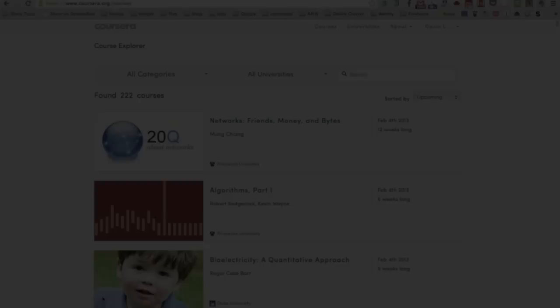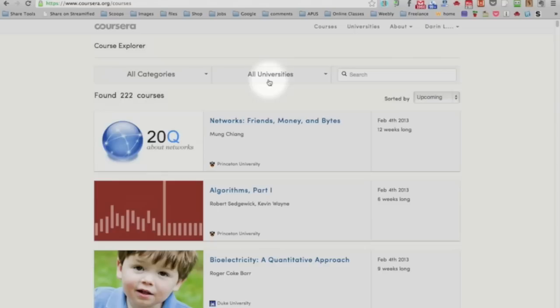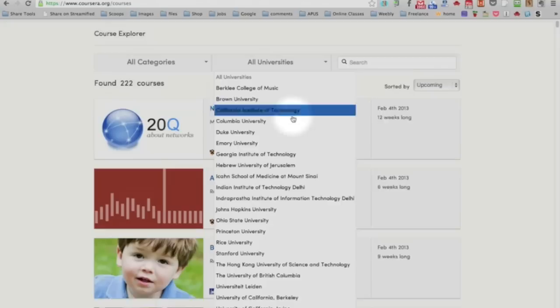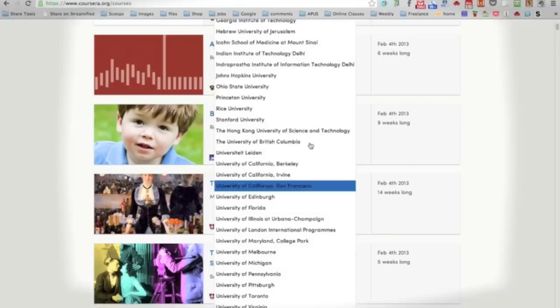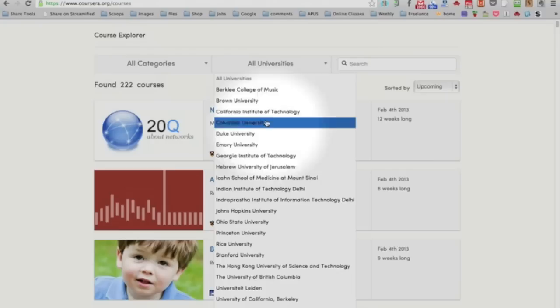What I wanted to do here was to take you to Coursera because I have an account there and can show you a few things. And this is after, of course, you've already registered. You've got the tab there where you can look at all the categories. And this tab here, which you can search by university, which university you want to take a course from.